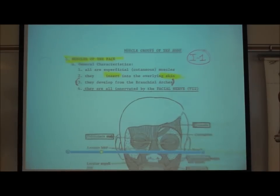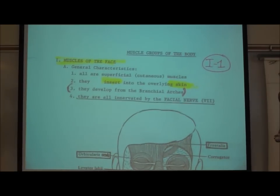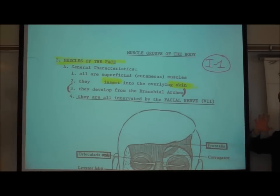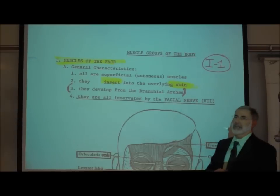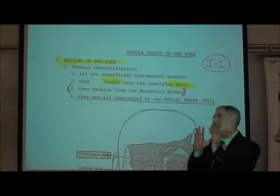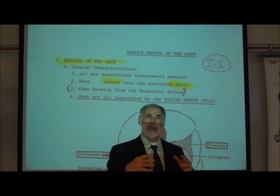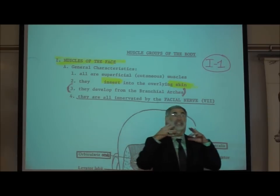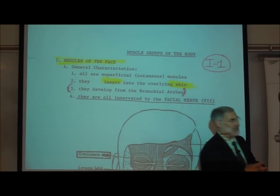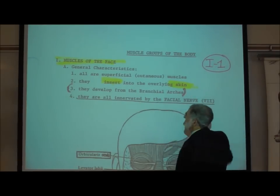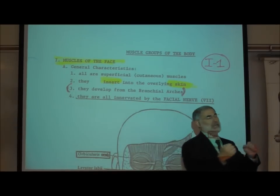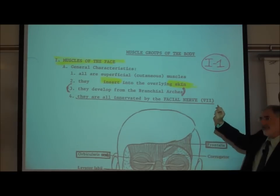All of the muscles of the face are superficial and cutaneous — that means they are associated with the skin; they insert on the skin. Technically, the facial muscles actually develop from what are called brachial structures, related to gill structures, but I'm not testing you on that. Furthermore, all of these facial muscles are innervated by the facial nerve, also known as cranial nerve number seven.